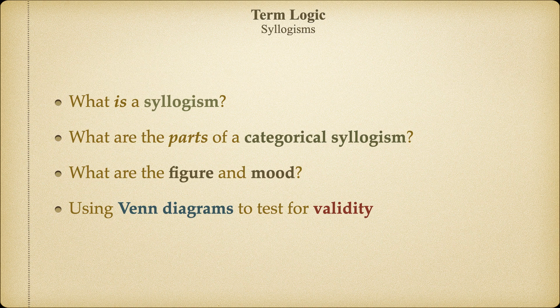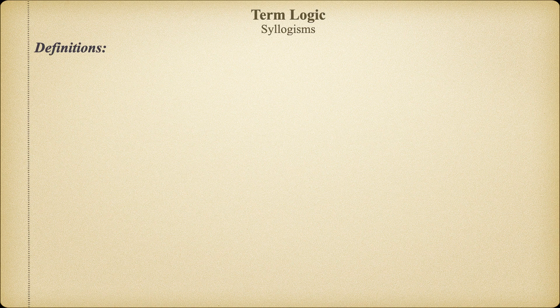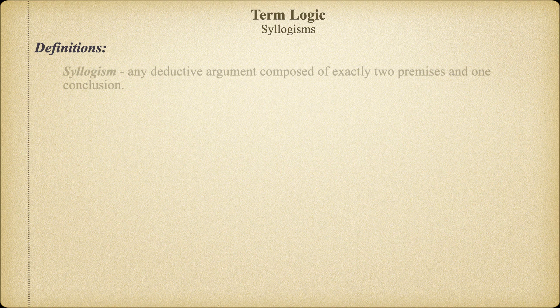Let's get started with some definitions. We already know that every argument must contain at least one premise and at least one conclusion, so the simplest arguments may contain only two statements. A syllogism is a more complex argument containing exactly three propositions—two premises and one conclusion. Syllogisms are part of formal logic, and therefore are always deductive.